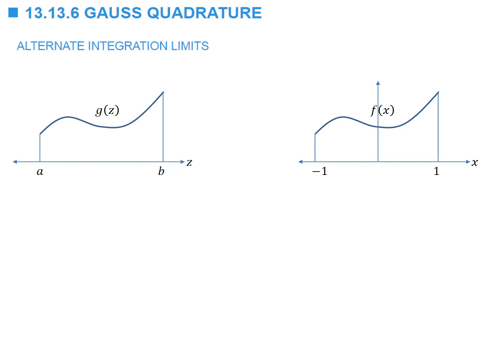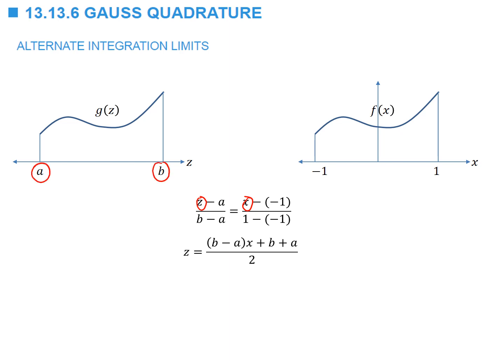We can form a relationship where z minus a over b minus a equals x minus negative one divided by one minus negative one. This gives us the relationship that z equals b minus a multiplied by x plus b plus a, all divided by two, where b and a are the integration limits of the function g of z that we would like to integrate.